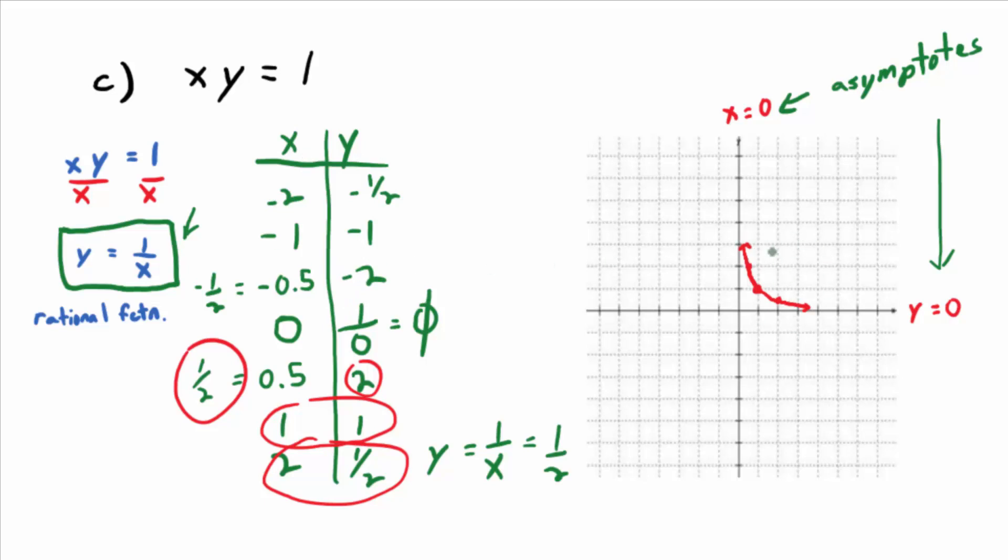It'll look much like this guy except rotated 180 degrees, I guess. And we'll plug in, I'll do the negative one, negative one first. The negative two, negative one half next. And then the negative one half, negative two.